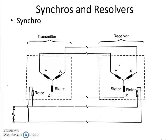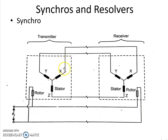Now let us discuss about synchros and resolvers. These are a class of AC electromechanical variable coupling transformer devices, basically used for angular data transmission. The basic structure of a synchro consists of a wound rotor and a wound stator, mutually coupled to each other. The rotor is wound with a single-phase concentrated winding, and the stator is wound with three-phase distributed windings connected in a star configuration.